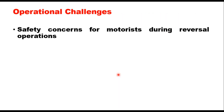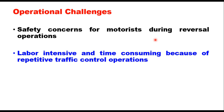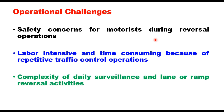Reversible lanes are not suitable for roads divided by a central median. Agencies face several challenges as part of reversible lane operations. The first is safety concerns for motorists during reversal operations. Whenever the direction of travel in a lane is changed, it requires placing or removing barriers, changing traffic lights, making traffic surveillance very complex.